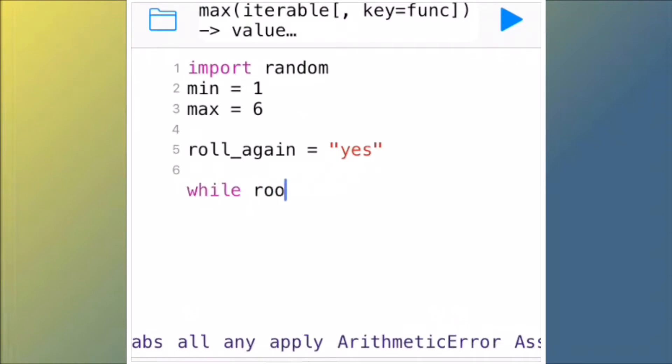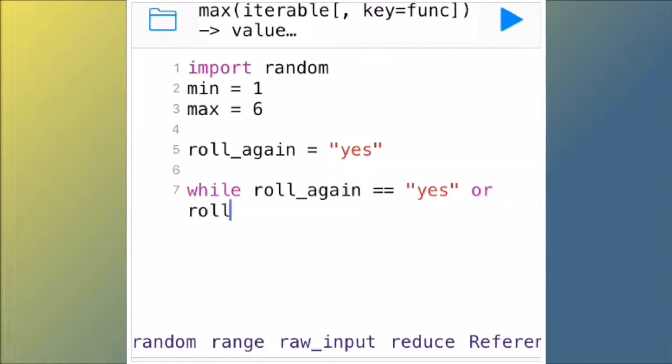Now you want to do: while space roll underscore again space double equals - that's double equals with no spaces in between - equals space two quotation marks yes, then space or space roll underscore again space double equals two quotation marks y.